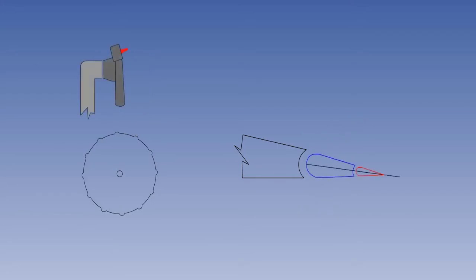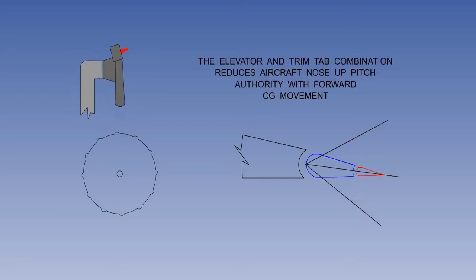Let us now have a look at one of the disadvantages of the trim tab: reduced aircraft nose-up pitch authority with a forward CG. Maximum elevator travel is limited by the primary stops. In this example, let us assume the elevator can move 30 degrees up from neutral and 30 degrees down from neutral, a total travel of 60 degrees.